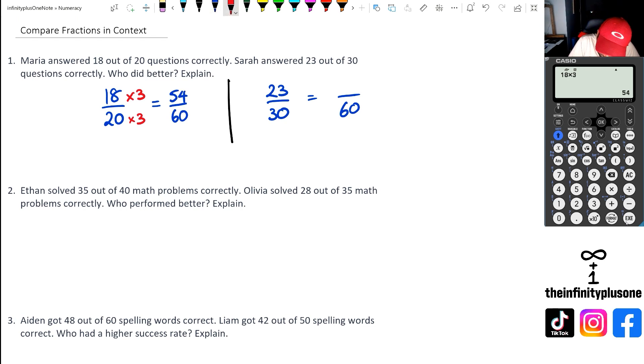Now as for the 23 over 30, we're going to go 30 times two to get to 60. And we also have to do the same thing for the numerator. 23 times two. Now that's equal to 46. So if you look at it, who's actually done better? Well, 54 out of 60 is bigger than 46 out of 60. So we're going to say Maria did better.